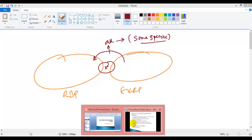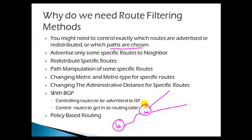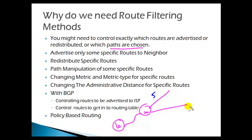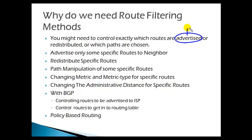Route filtering is also applicable for path manipulation. For example, if you have two routes to reach a specific destination and you're receiving ten routes, you may want five to use one path and the remaining five to use an alternate path. We can also do path manipulations to define what path a router should use to reach a specific destination. This can be source-based or destination-based, which is what we call policy-based routing — we'll cover that more in detail in the next video.